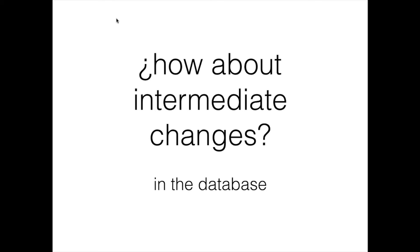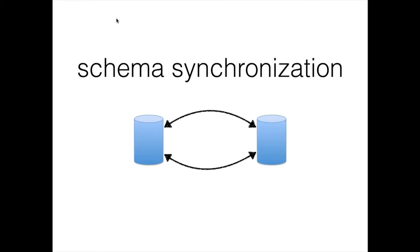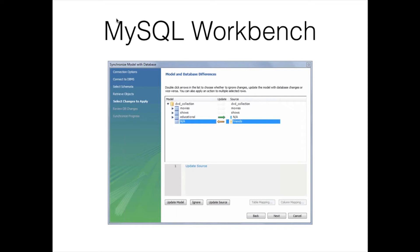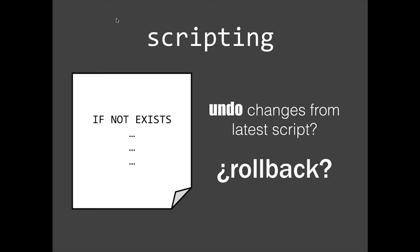Another way of updating the database is schema synchronization. There are tools that give us the ability to do it — one of them is MySQL Workbench. But again, the main problem is we still have to deal with intermediate changes when updating the schema on our production server. Another approach people used is scripting — I did this many times, creating bash scripts to update the schema. But the main issue is how do you undo the changes of those scripts.